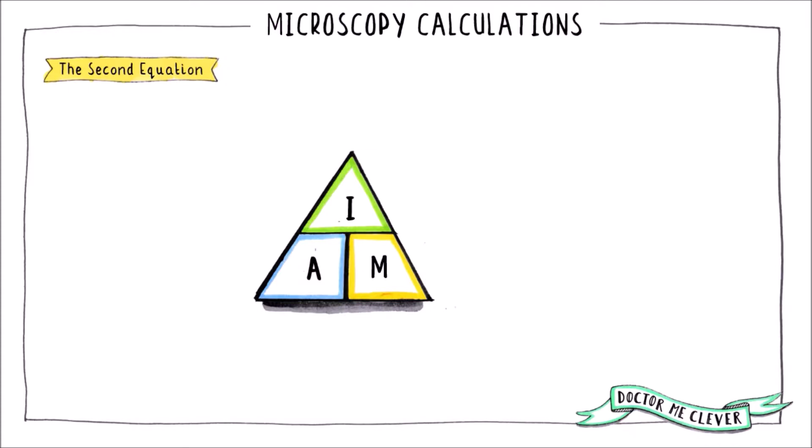Looking at the triangle, the I stands for the image size. This is the size of the image on your question paper. You often have to measure this yourself so make sure you have a ruler that measures millimeters with you in your exam. The units of the image size will most likely be millimeters or centimeters.